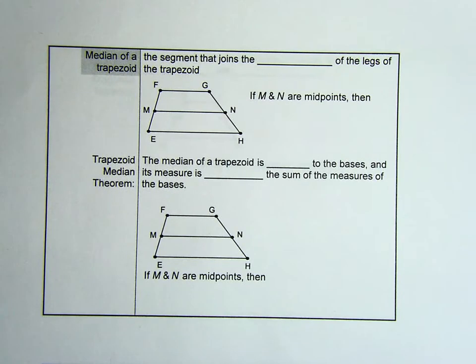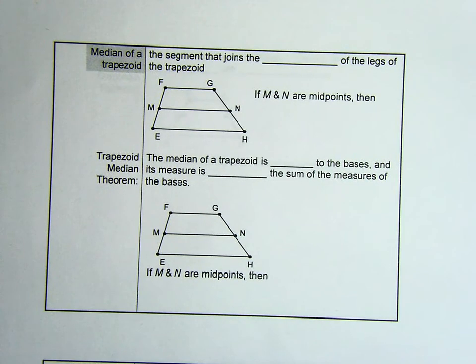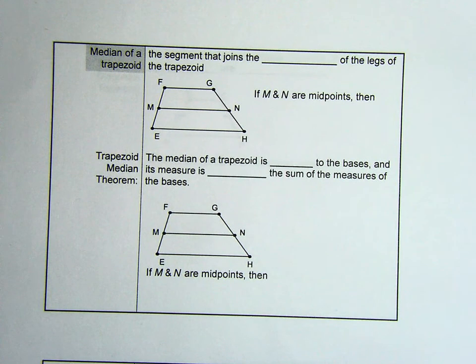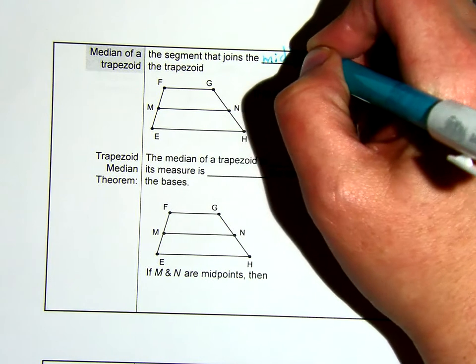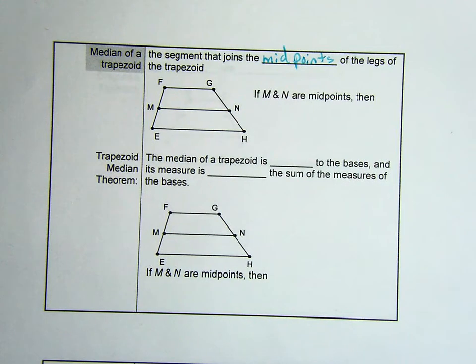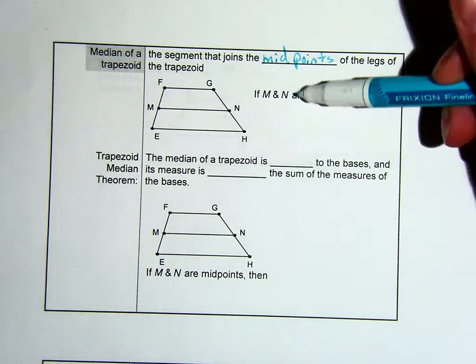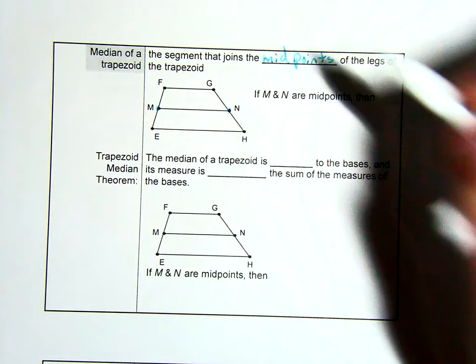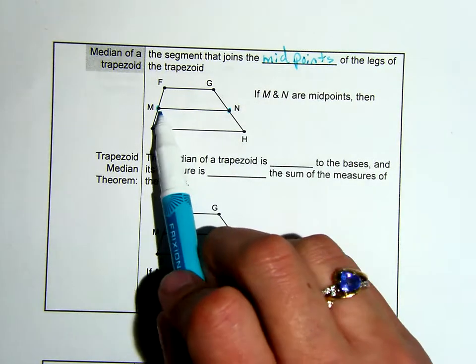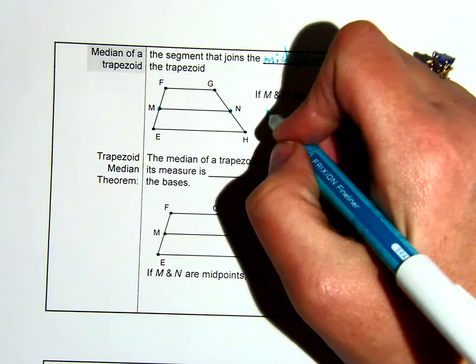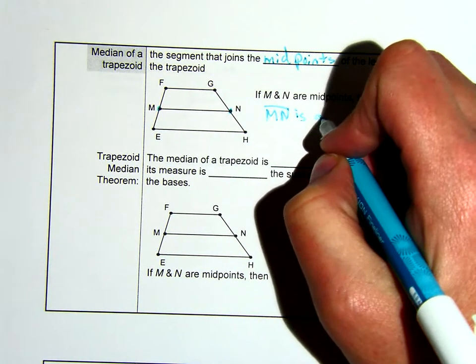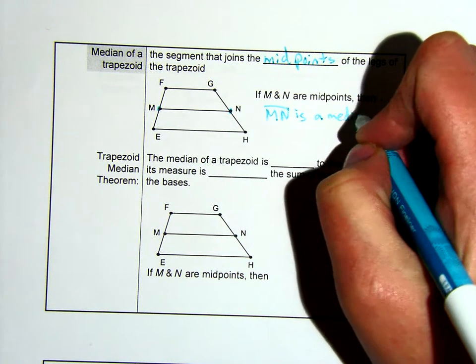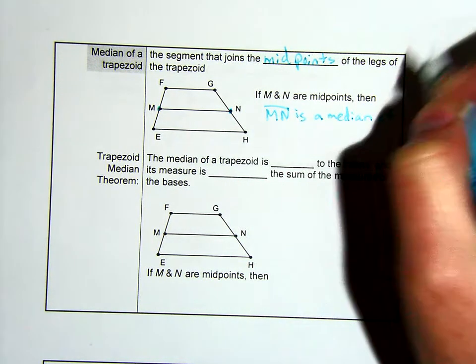Besides base angles of a trapezoid, we also have what is called a median of a trapezoid. This is the segment that joins the midpoints of the legs of the trapezoid. So if M and N are midpoints, then when we connect them, we say that segment MN is a median of a trapezoid.